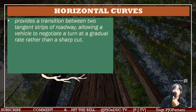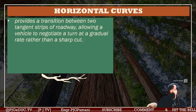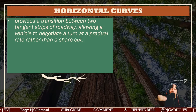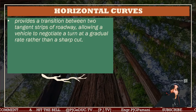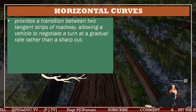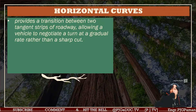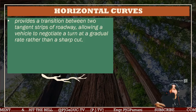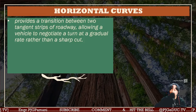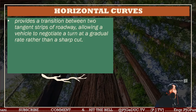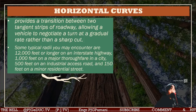Horizontal curves provide a transition between two tangent strips of roadways. We have specific considerations with respect to super elevation — how this particular roadway is designed for the speed of vehicles passing through, which is why we have signages indicating the speed limit, allowing a vehicle to negotiate a turn at a gradual rate rather than a sharp cut.